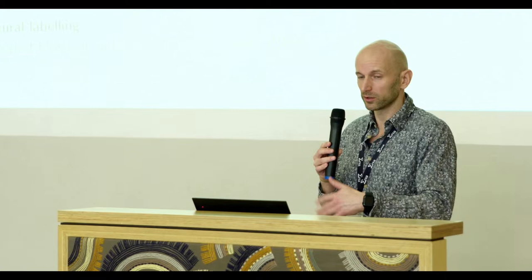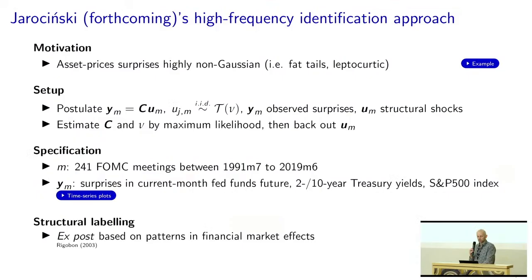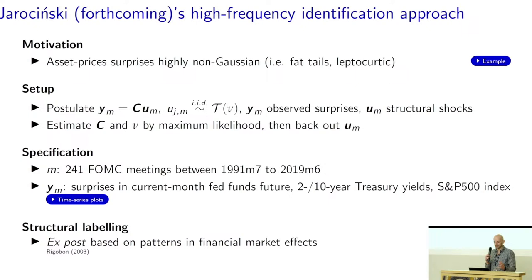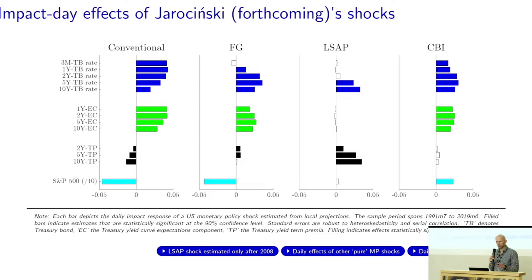The structural labeling is not part of this identification — this is a statistical identification approach. The structural labeling of these shocks occurs ex-post. Once you've estimated the structural shocks, you look at the patterns these shocks induce in financial markets and compare against economic theory to say, 'okay, this pattern looks like this shock is reflecting X.' This is very similar to what Rigobon proposed in identification through heteroskedasticity. It's actually part of a broader agenda called independent component analysis — identification based on statistical properties.